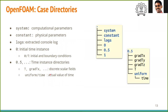Firstly, the case directory contains the subdirectories: system, constant, logs, and numbered directories. As we learned in the OpenFOAM lecture, these represent computational parameters, physical parameters, console output logs, and time instances.